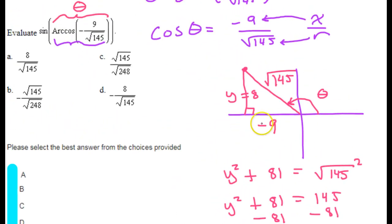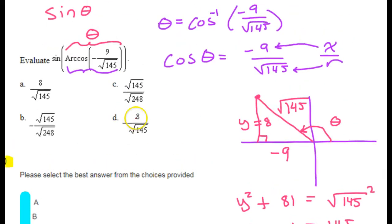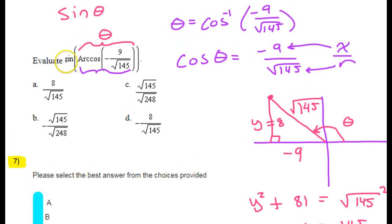So, getting back to business, we are supposed to find the sine of this angle. So remember that the sine is y over r. But we just found that y is 8, positive 8. So that's 8 over r, which we already knew to be radical 145. So the sine is 8 over radical 145.